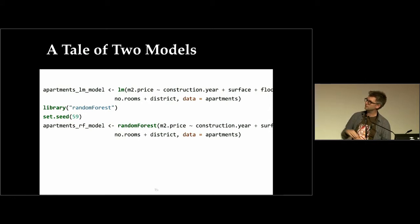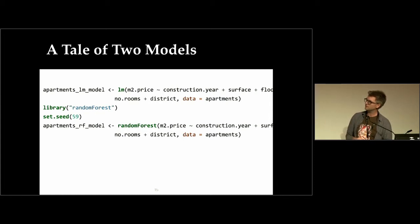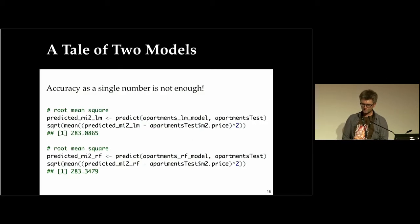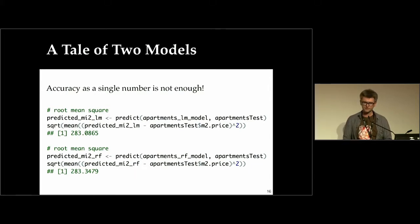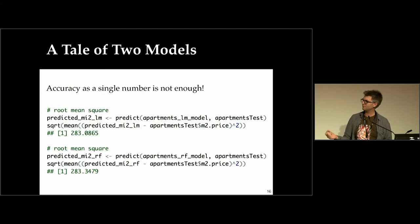A simple example: a tale of two models. I use a random forest model (the elastic one) and a linear model (a basic additive model), and I show how to use DALEX to compare them. I fitted both models to a training dataset, tested performance on a holdout set, and it turns out the RMSE of both models is almost identical — 283. So we have two very different models with almost exactly the same performance.